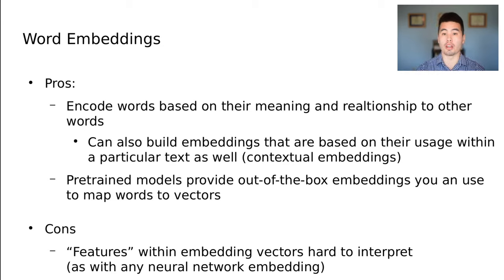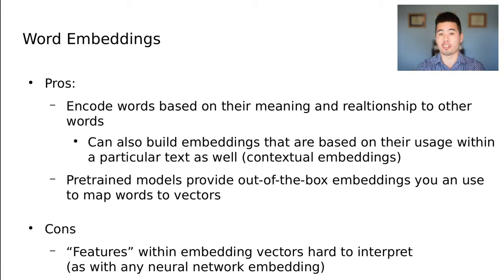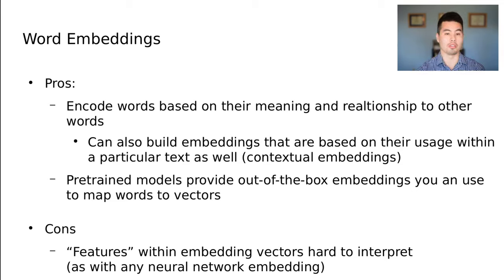Some pros and cons of word embeddings. Pros: we can find really interesting and meaningful relationships between words that go beyond traditional bag of words into continuous bag of words or word embeddings that rely on meaning and context. Best of all, these embeddings are trained out of the box — you can just use them to transform your text into feature vectors. A big con, like all neural network methods, is that the model itself must be treated as a black box: it's really hard to take the set of features and figure out exactly what the meaning is for any given word or which dimensions it's representing.